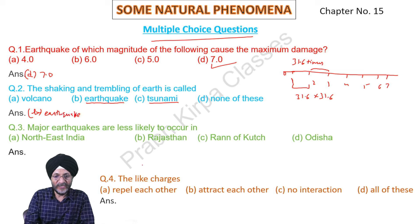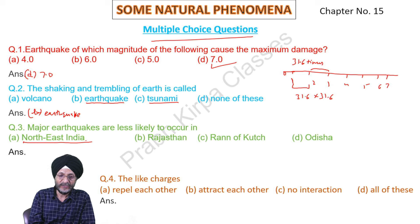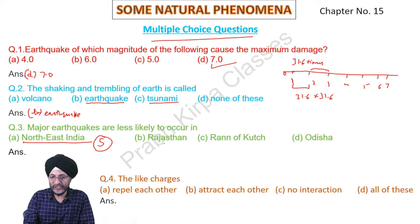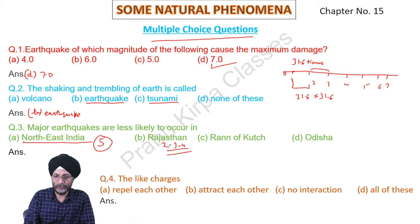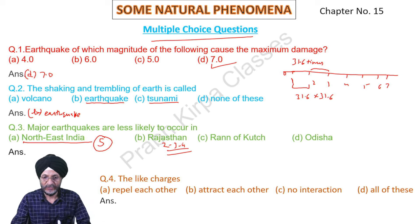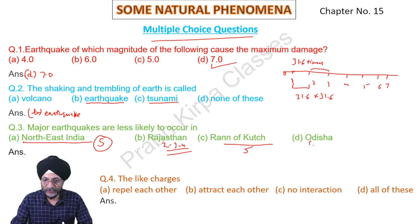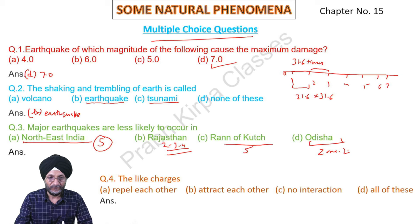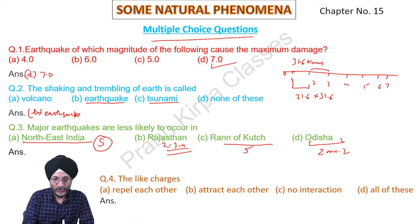Major earthquakes are less likely to occur in which state? The North East Indian states all fall in zone 5. Some parts of Rajasthan fall in seismic categories 2, 3, and 4. Odisha falls in zone 2 category, so major earthquakes are less likely to occur in Odisha.